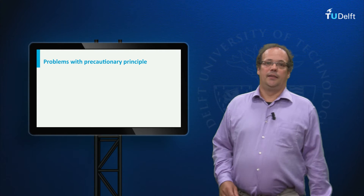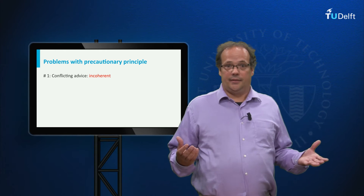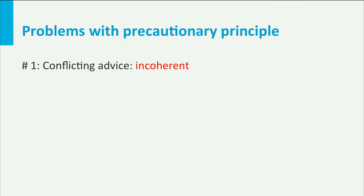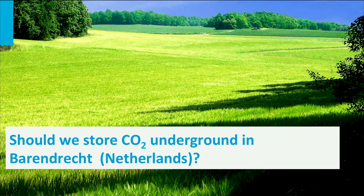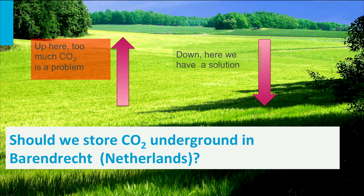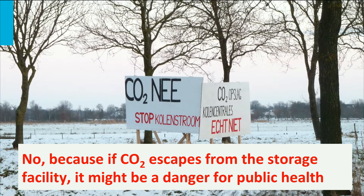Still, the precautionary principle has two main drawbacks. The first problem is that it sometimes gives conflicting advice and is incoherent. Consider applying it to the capture and storage of carbon dioxide. In the Netherlands it was proposed to store carbon dioxide below the town of Barendrecht, close to Rotterdam, and this led to heated opposition. On the one hand one might say yes — capture and store carbon dioxide because it contributes to the greenhouse effect. But equally one might say no — because if carbon dioxide escapes from the storage facility, it might endanger public health. Both applications refer to possible but not completely certain dangers, so on the grounds of the principle alone we cannot make a decision; we get conflicting advice.